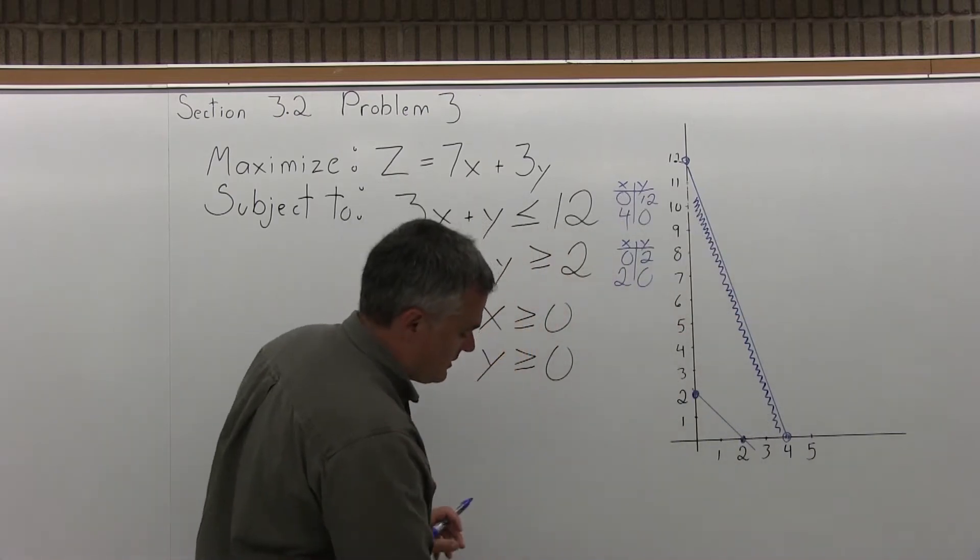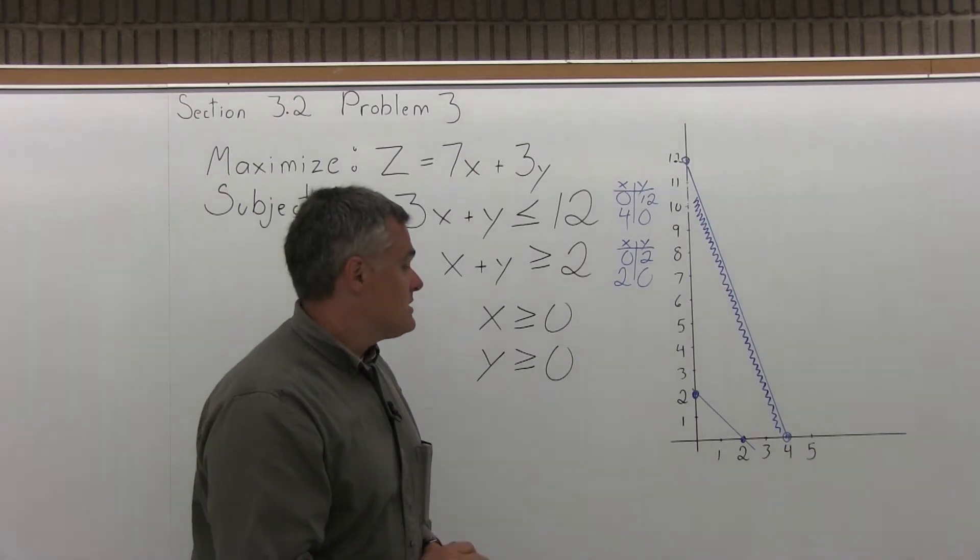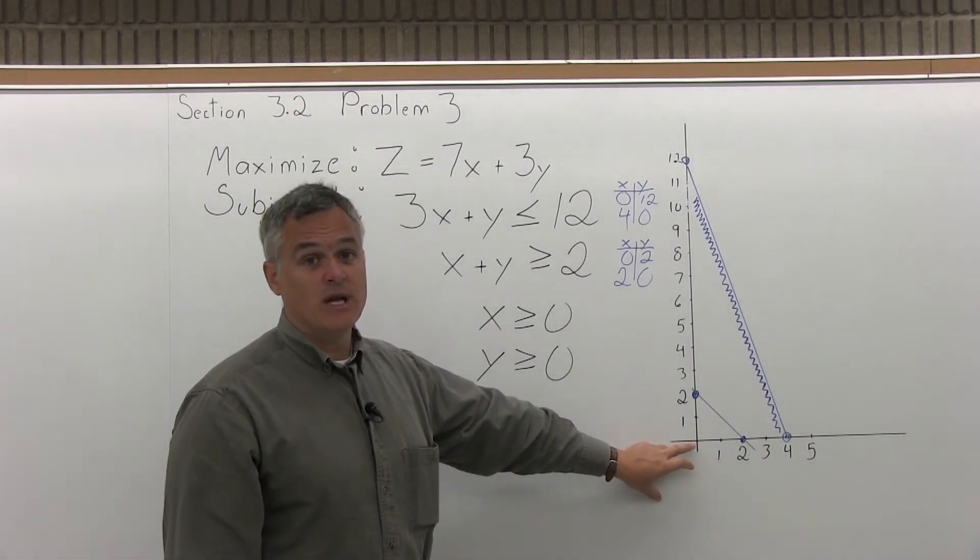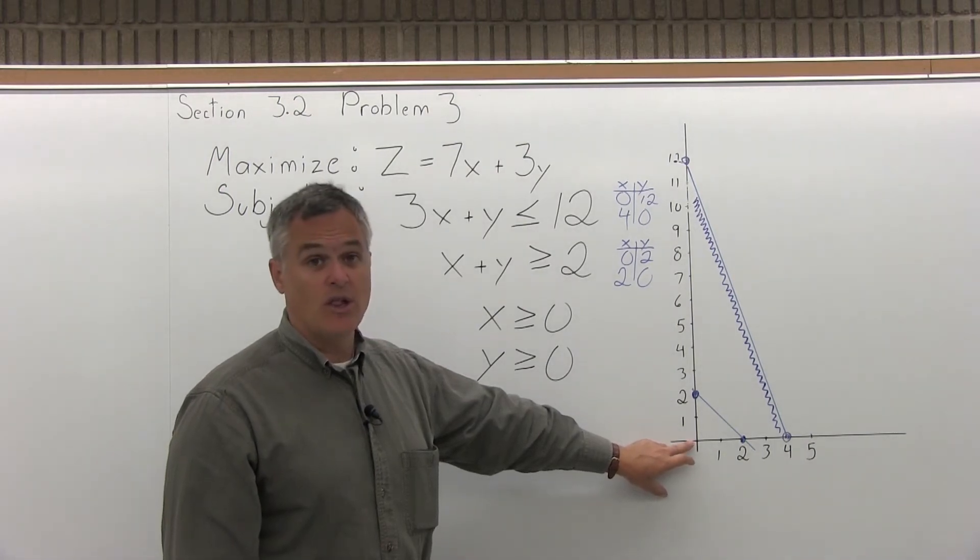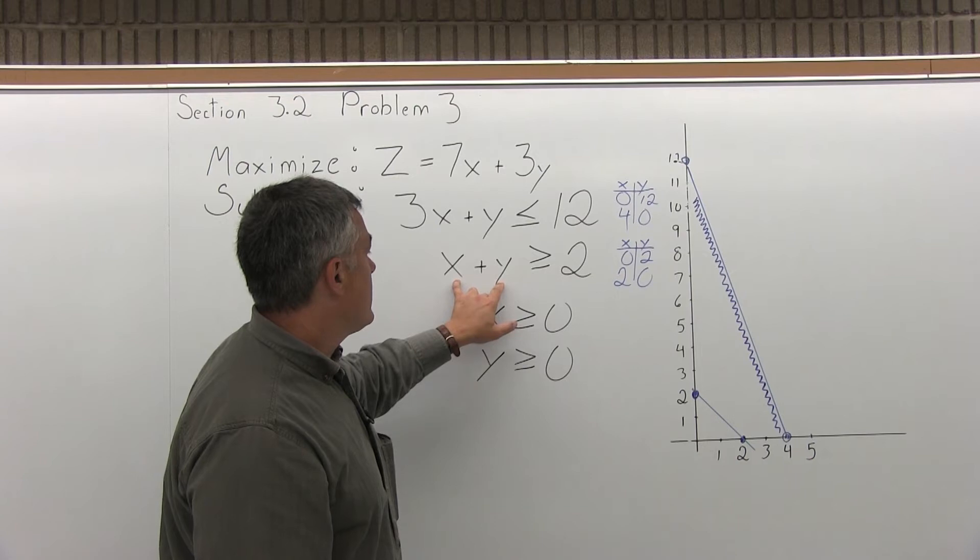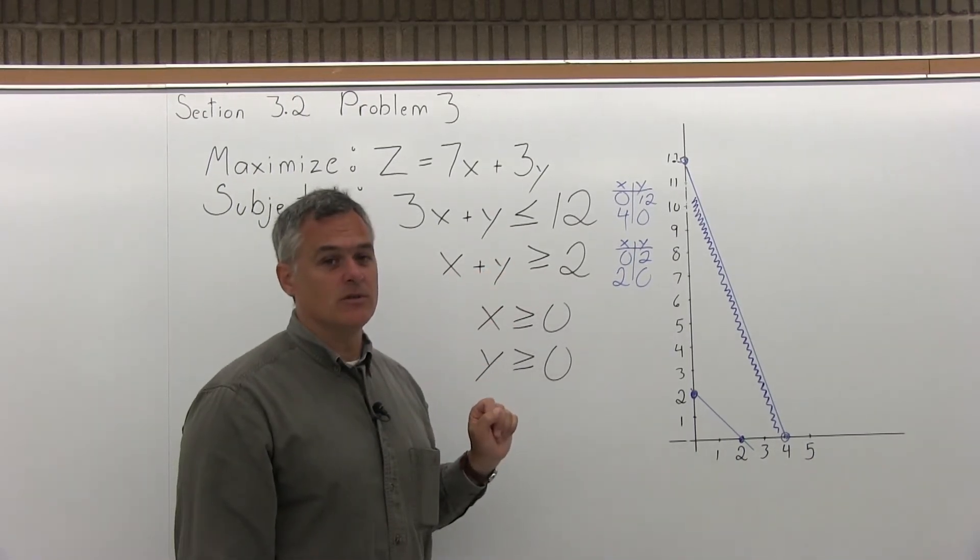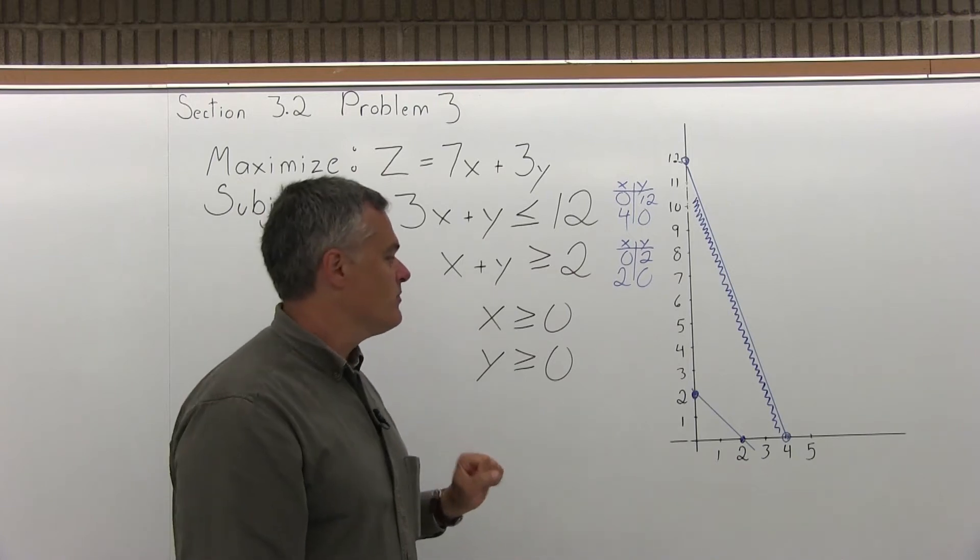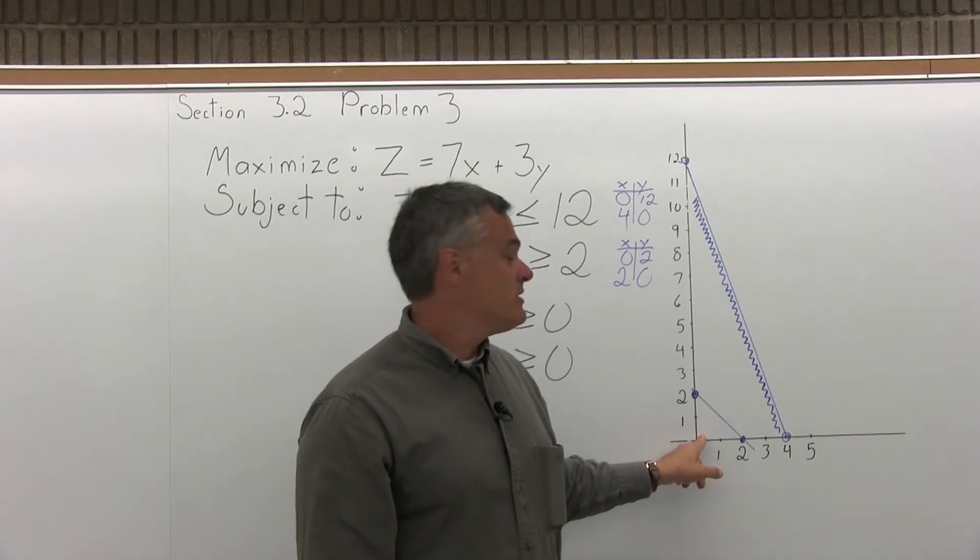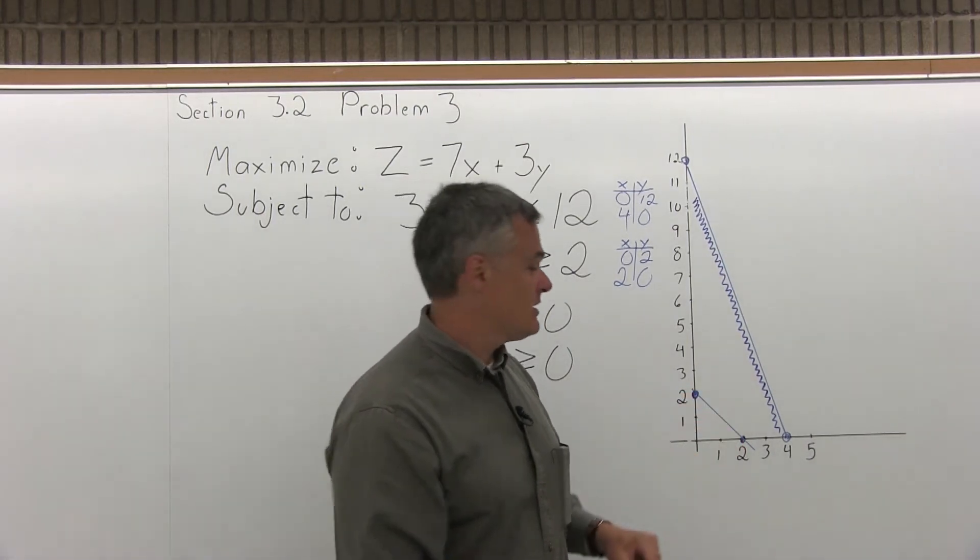And again, I need to decide, do I shade above that line or below it? Same process. Choose a test point that's not on the line. Use 0, 0 if you can. 0, 0 is not on the line, I can certainly use it. Put in 0 for x, 0 for y, and I get the statement 0 is greater than 2. That's not true. 0 is not greater than 2. So my test point was on the underneath side. It gave me a result that was false. Therefore, the underneath side is blank. That means the up above side, the opposite side, is shaded.